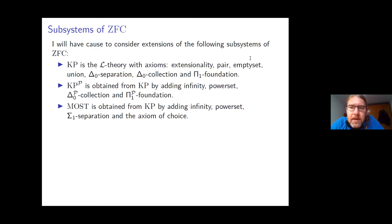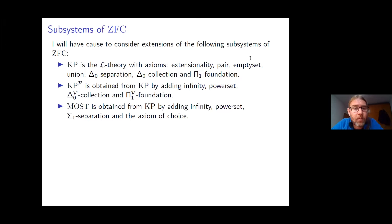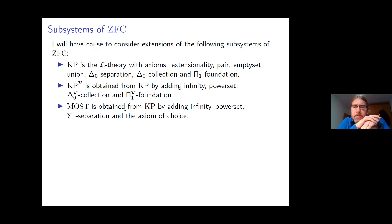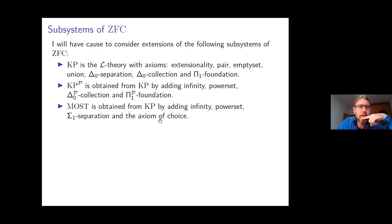Another subsystem I'll consider is MOST — Mostowski set theory — obtained from KP by adding infinity, power set, Σ₁ separation, and the axiom of choice. Note that KPP contains more collection than MOST, but MOST contains the axiom of choice and more separation, so neither is contained in the other. MOST is roughly the minimal set theory required to prove the Mostowski collapsing lemma: every well-founded extensional relation is isomorphic to a transitive set.